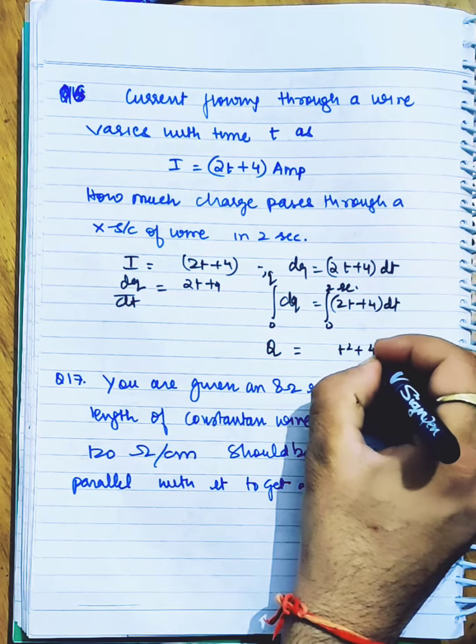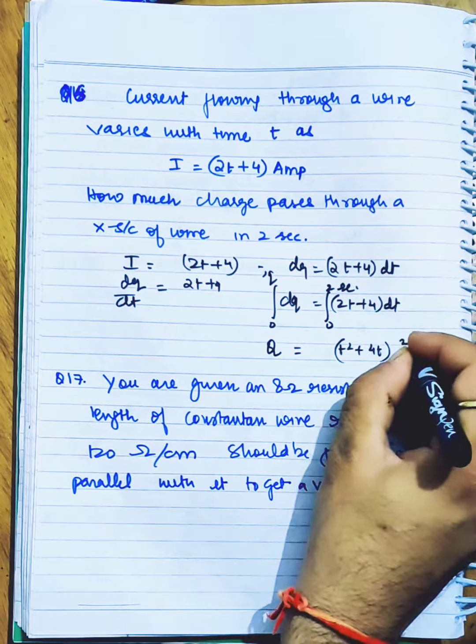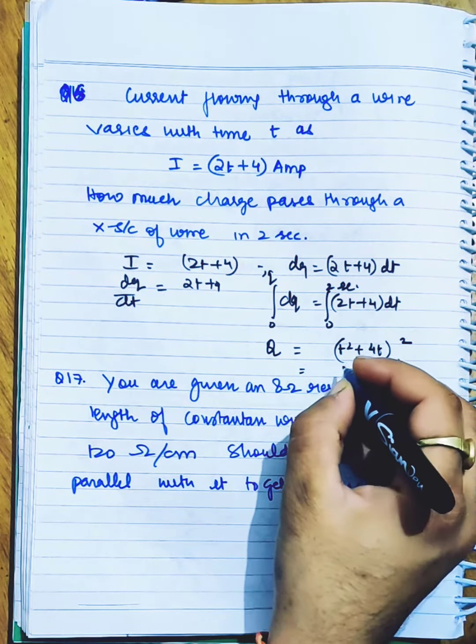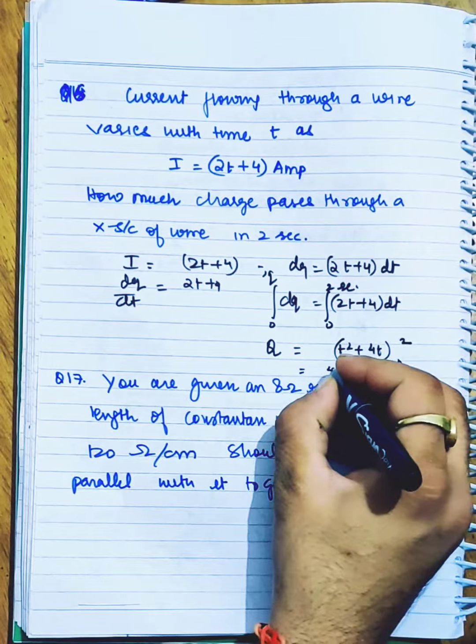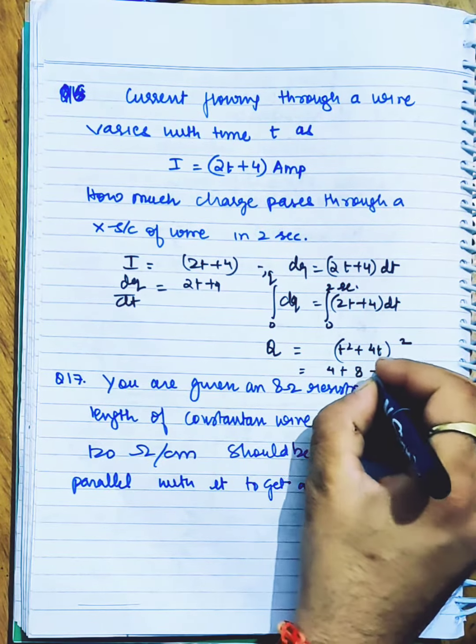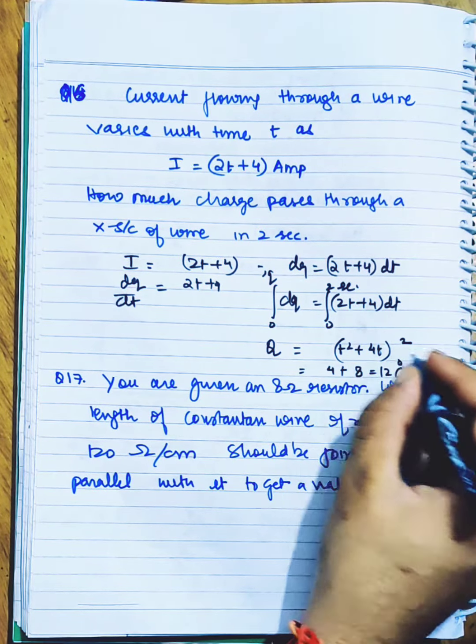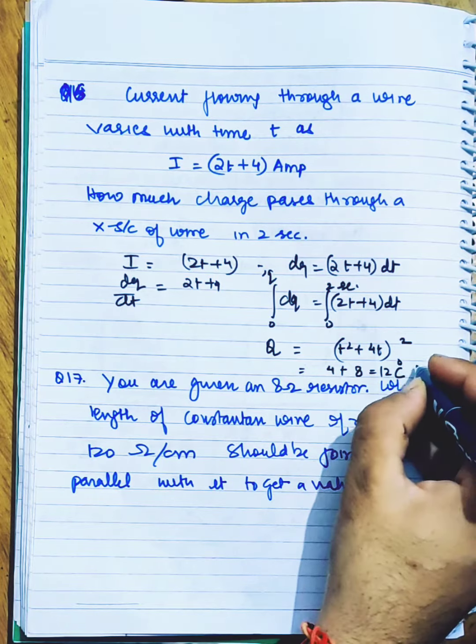Now put in the limits from 0 to 2. Putting 2: we get 4 + 8. The answer is 12 coulombs.